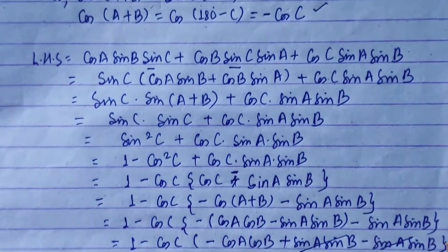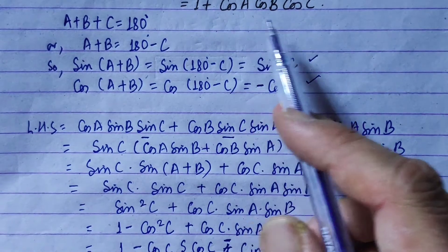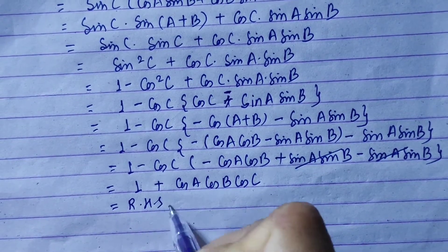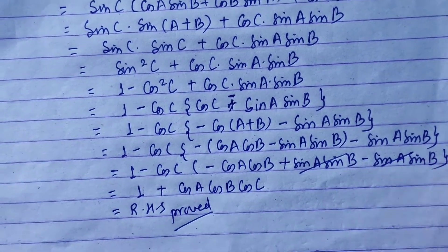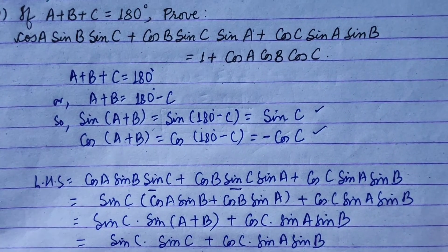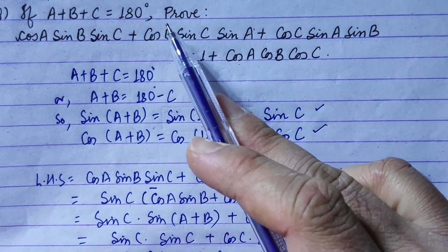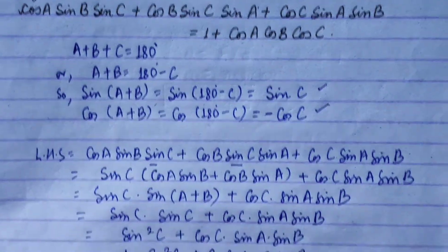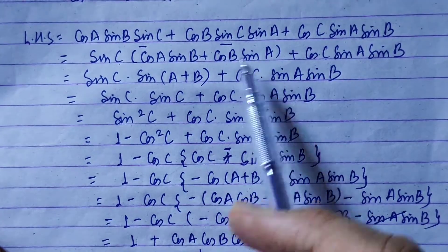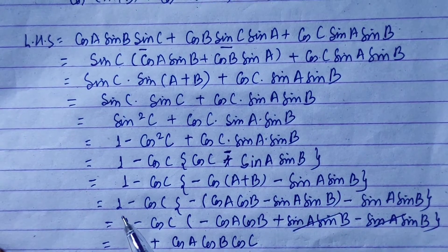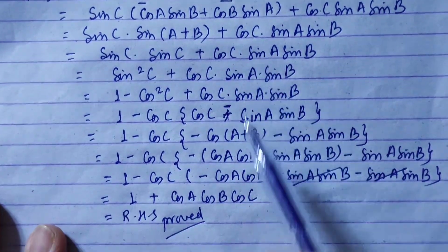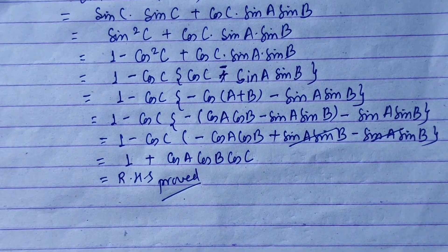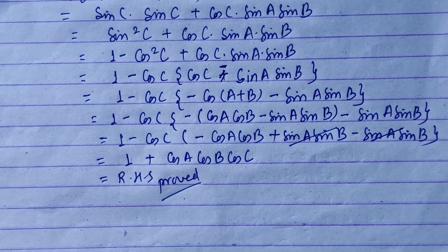And we are left with cos c times cos a cos b, giving us 1 plus cos a cos b cos c. This equals the RHS, so the expression is proved. In conditional trigonometry, when a plus b plus c equals pi, we use a common formula to replace and simplify. After the substitution, the RHS is proved. Thank you.